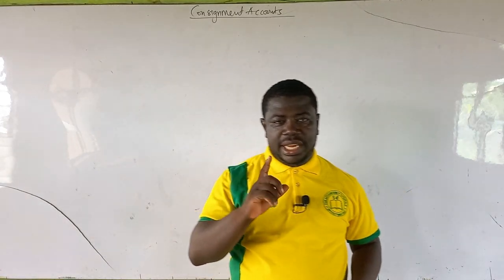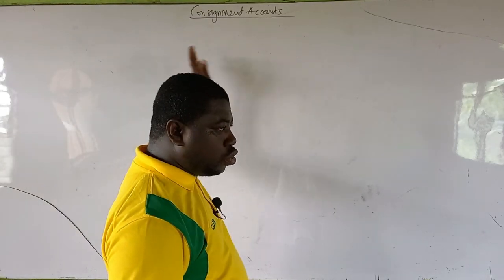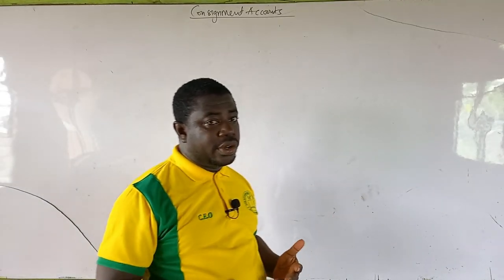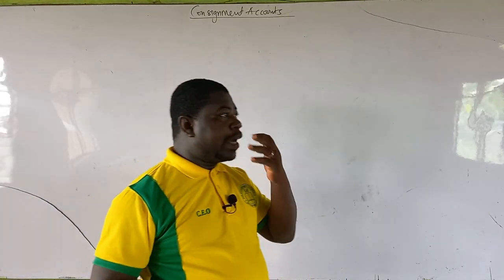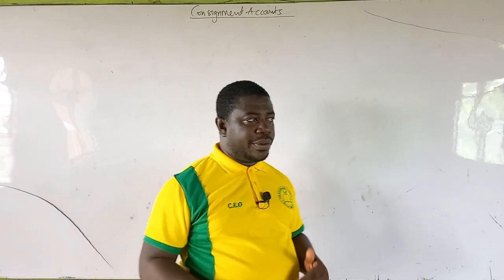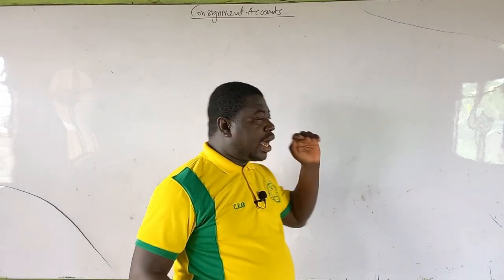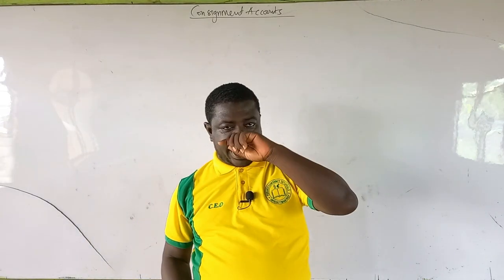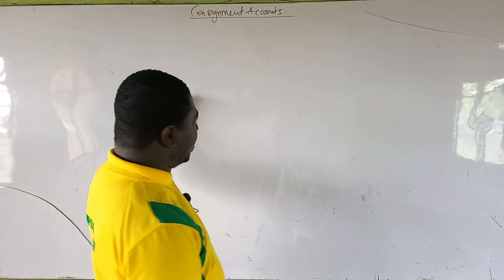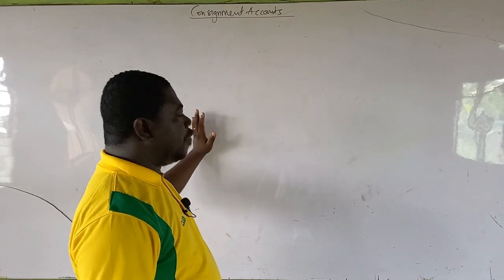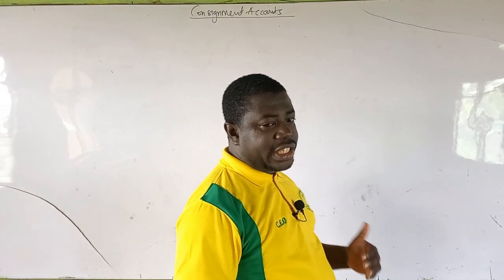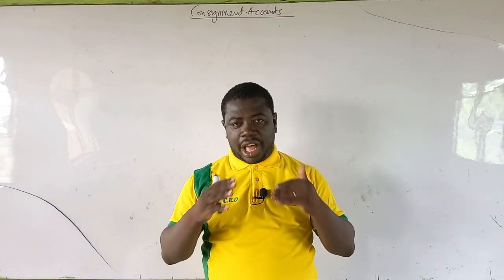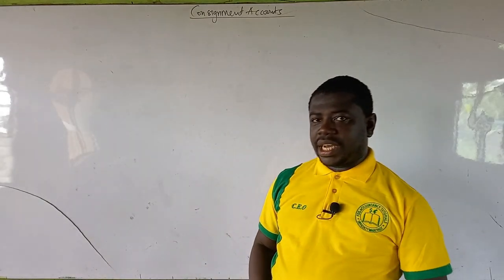We are required to write up the following accounts in the books of Albert: goods on consignment account, consignment to Benjamin account, and Benjamin account. In the books of Benjamin, we write up Albert's account. Now, before solving, note that in the goods on consignment account the principle is: credit what goes out. The goods are going out, so we credit them.